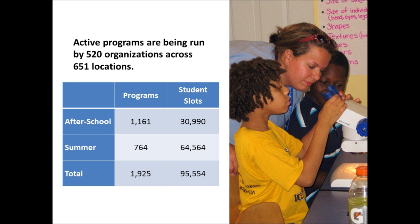So how much data is in Boston Navigator? When talking about data in Boston Navigator, we need to understand that we speak about programs being run by different organizations, and those programs may be happening at different locations across the city. Here you can see we have a total of 520 organizations across 651 locations. We've broken programs up into afterschool and summer, and you can see that we have a total of almost 2,000 programs running around the year, and that totals up to almost 100,000 student slots. A student slot is an individual opportunity for a student, and we may have students who are taking advantage of more than one slot.